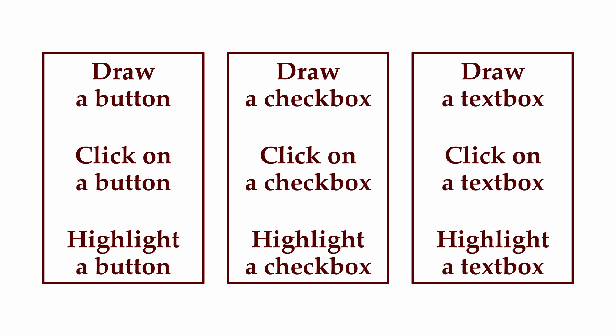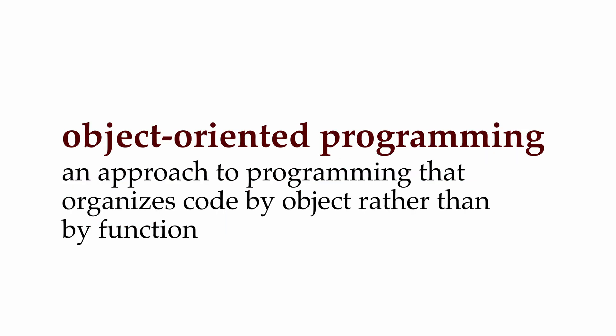This approach to programming is object-oriented programming, and it turns out to be a useful programming paradigm for organizing functionalities together with the data they operate on. So let's try to write some code for drawing shapes to the screen using an object-oriented approach. How might we try to implement this idea using the language constructs we already know about?